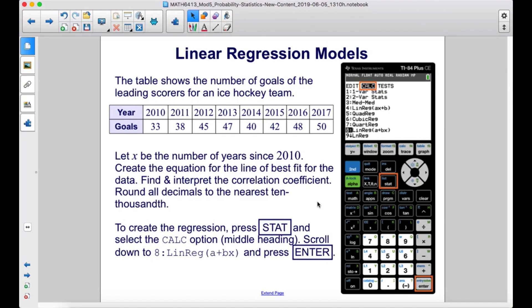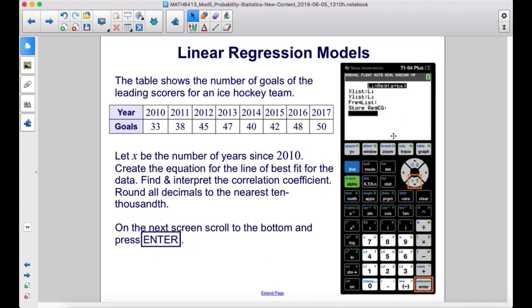To create the regression, press Stat and select the Calc option, the middle heading. Scroll down to 8, LinReg (a+bx), and press Enter. On the next screen, scroll to the bottom and press Enter.